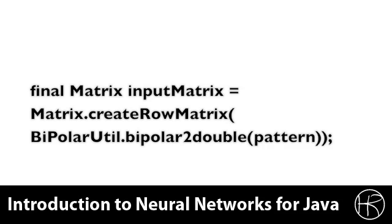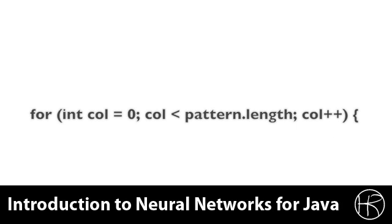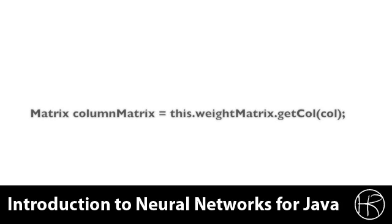This method was covered in class session two. Next, we want to loop over every one of the input neurons, which corresponds to a number in the pattern. This algorithm corresponds to the algorithm we learned for recalling patterns from a Hopfield neural network in the first part of this course. The for loop will loop over every single element in the input array. Next, we obtain a column matrix for the specified neuron we are currently working on. This will be the connection between the neuron corresponding to the input array and all of the other neurons that this input neuron is connected to.